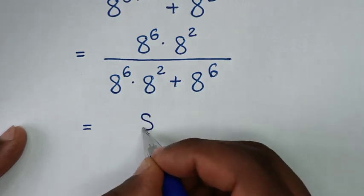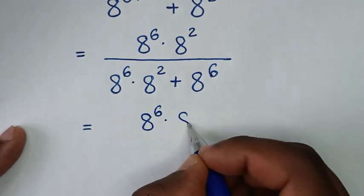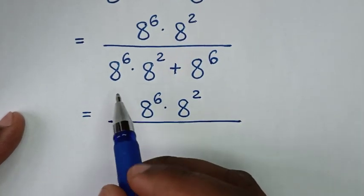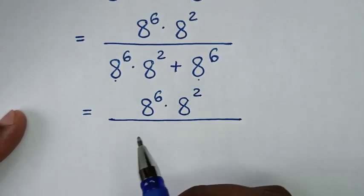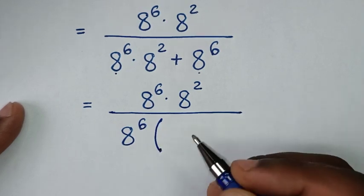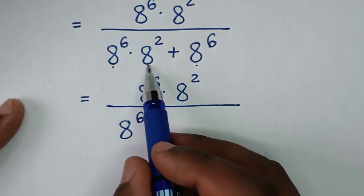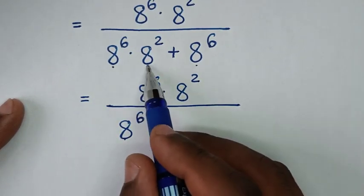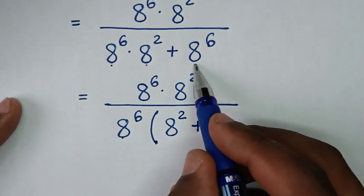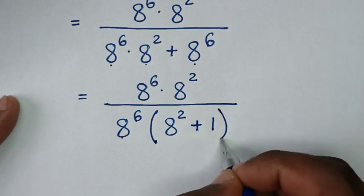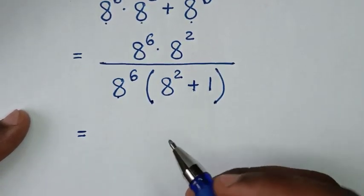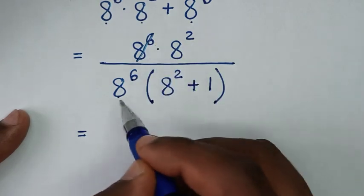In the next step, we have 8 power 6 times 8 power 2 in the numerator. In the denominator, 8 power 6 is common, so we factor 8 power 6 out of the bracket, giving us 8 power 6 times the quantity (8 power 2 plus 1).